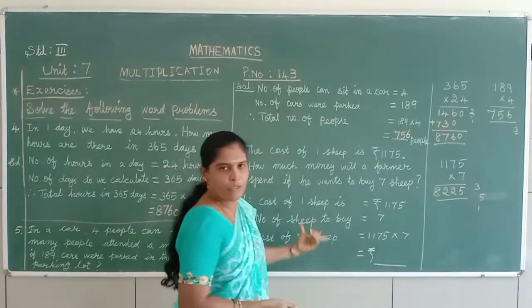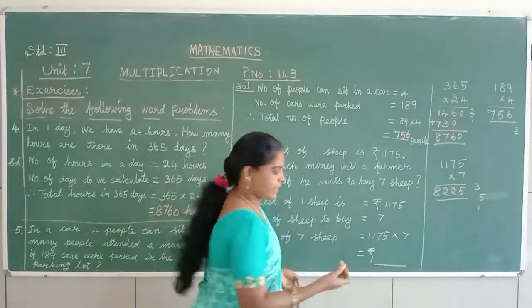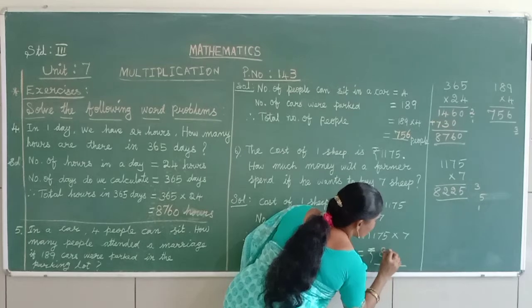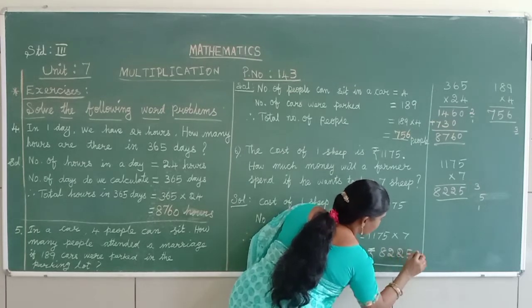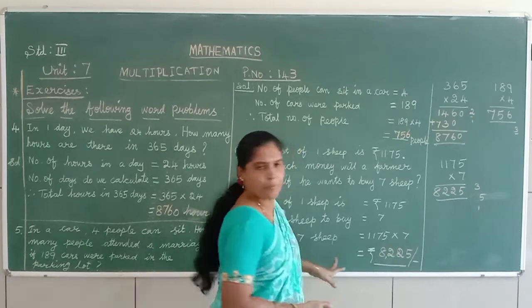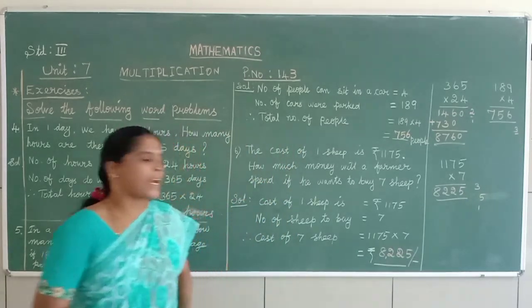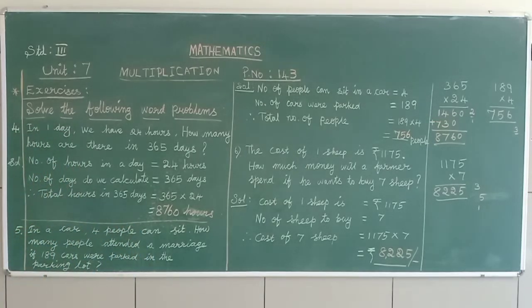So, how much amount the forward need to buy 7 sheep? 8,225 rupees the forward needs to buy 7 sheep. Okay, understand? Practice for your children. Thank you.